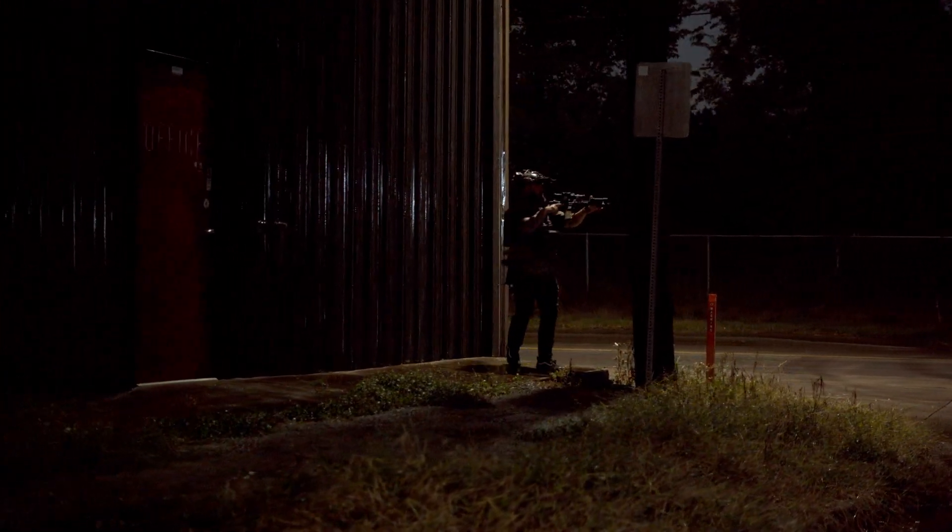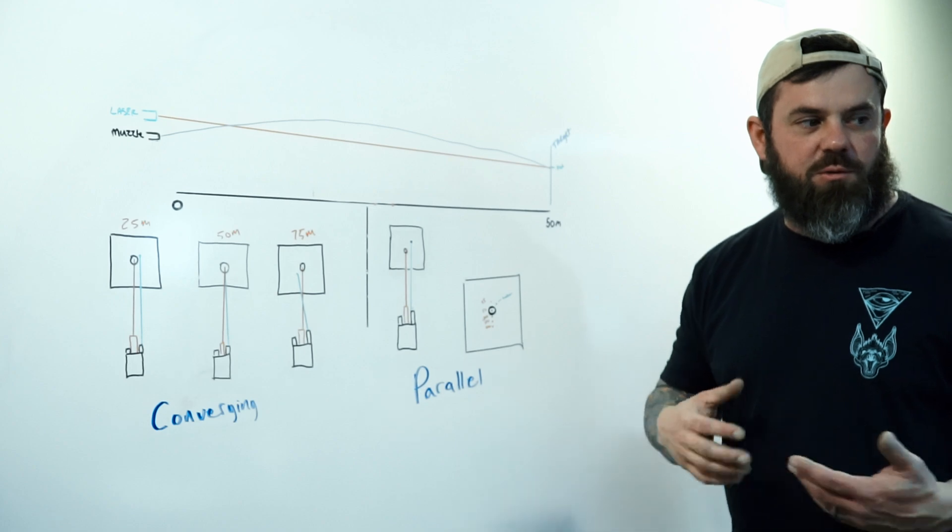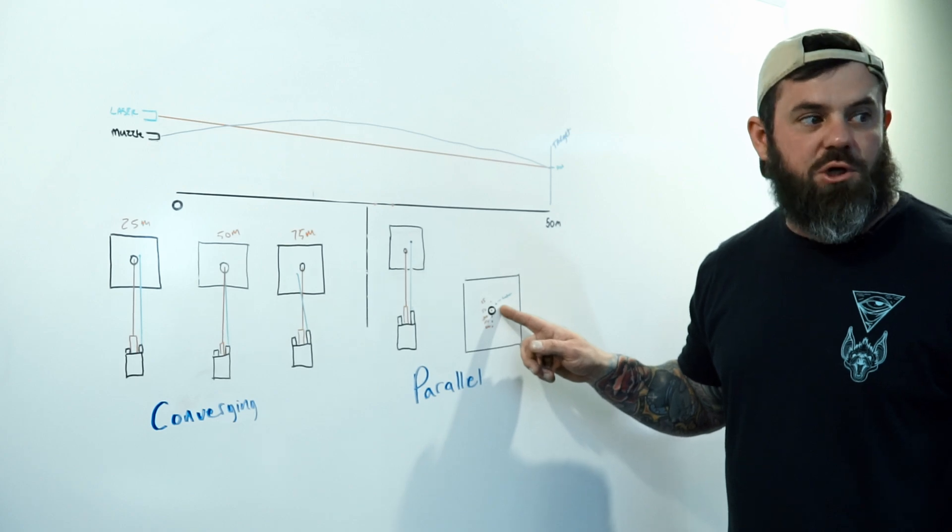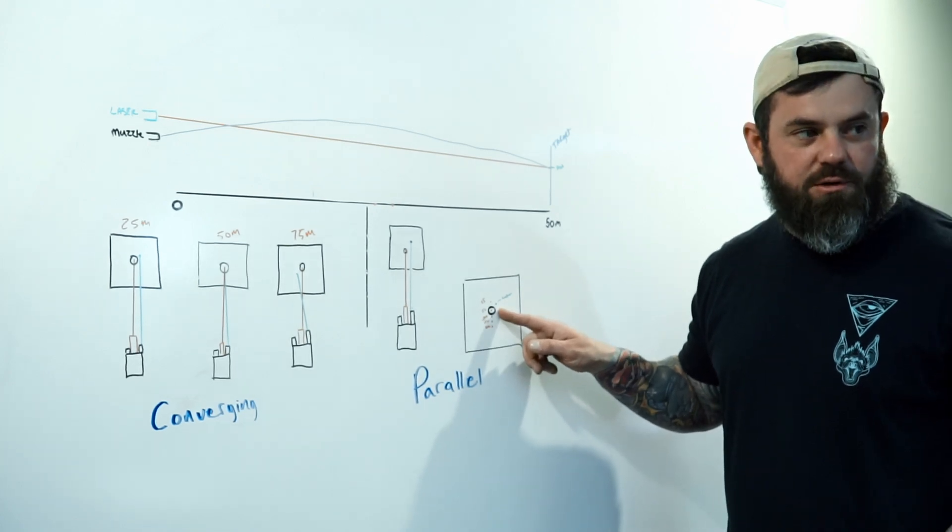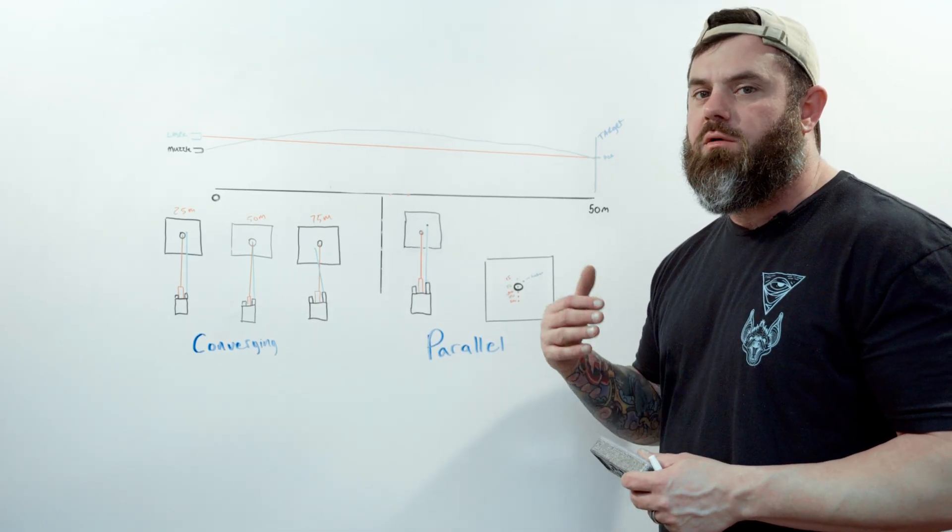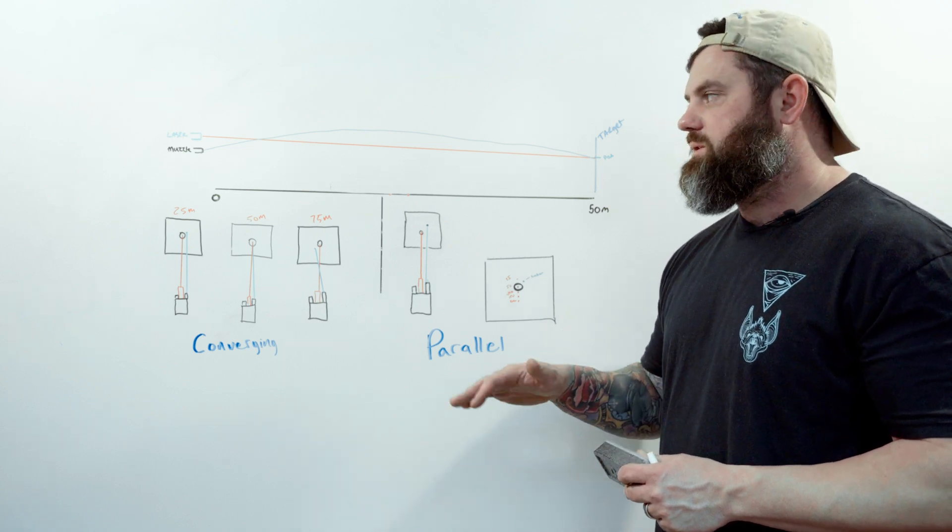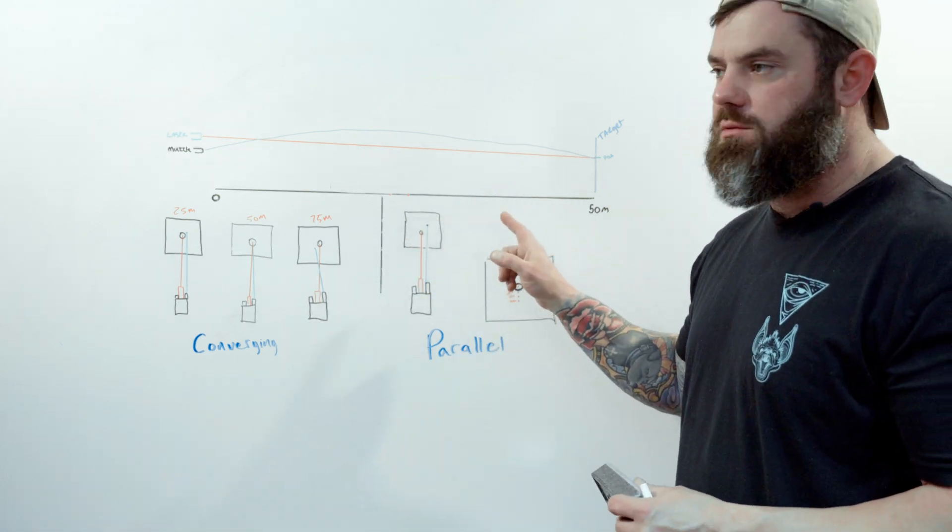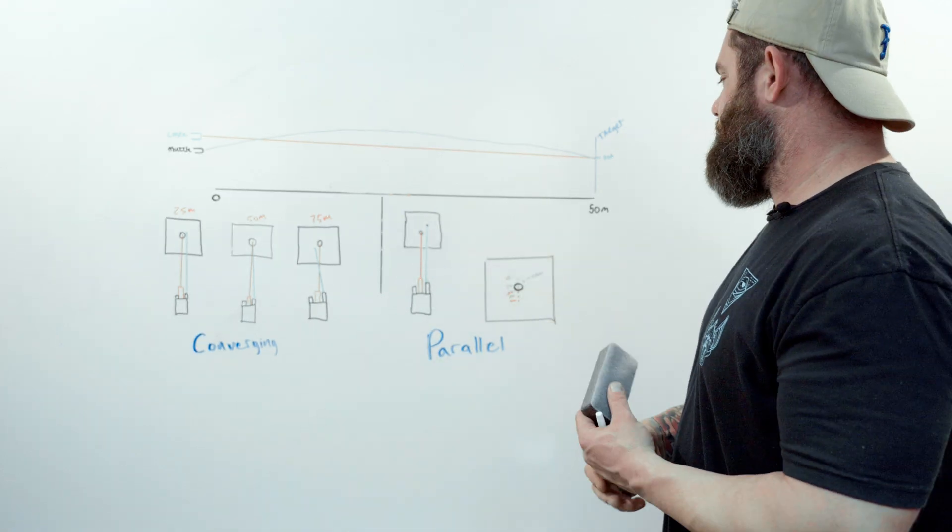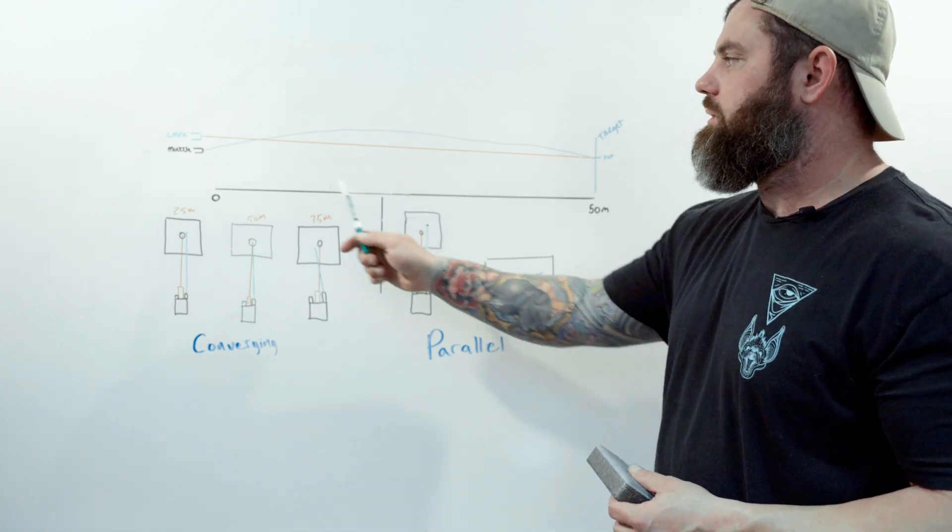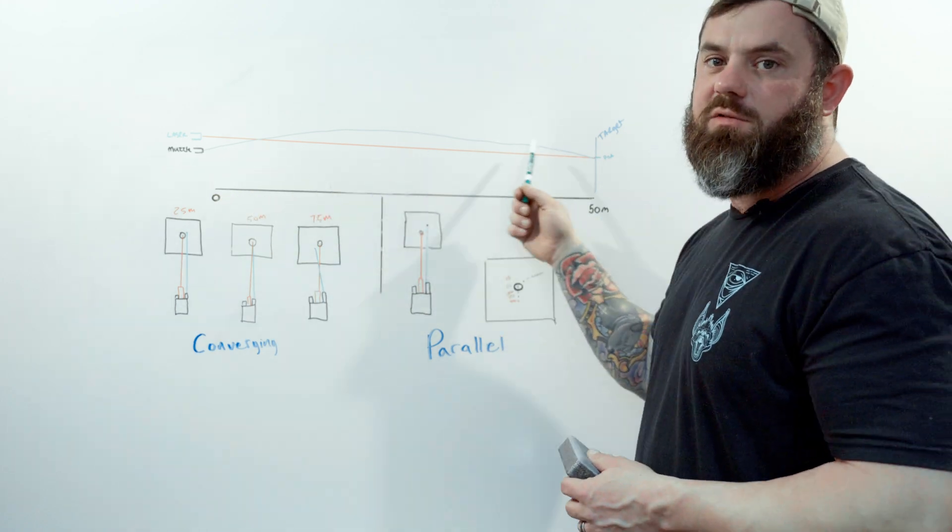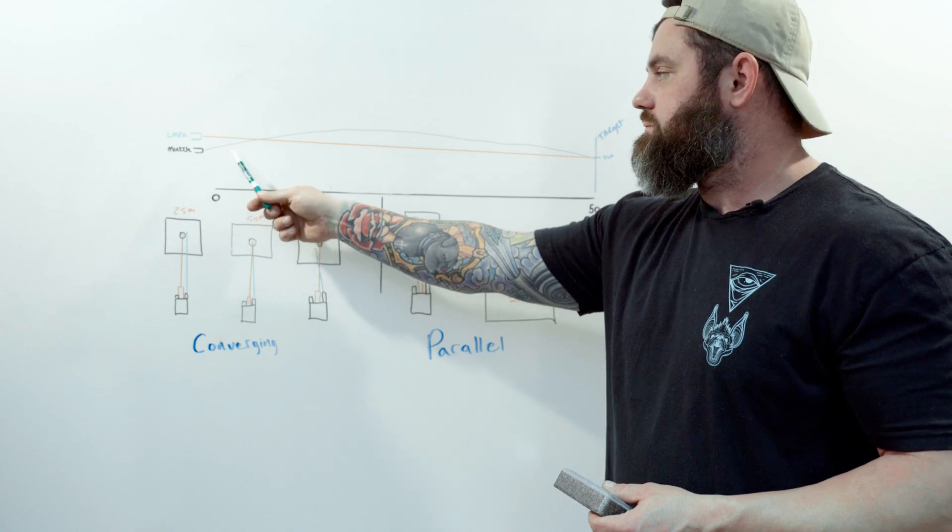It would be incumbent on you to determine the ballistic performance of your particular weapon system and come up with a mental dope chart, if you will, of where you need to hold your laser at different ranges. I'd like to give a more concise representation of what I'm trying to explain as it pertains to ballistic performance in relation to laser aiming solutions. This is not an accurate diagram by any means. I'm showing 50 meters to the target here. This is the muzzle, this is the laser. Lasers travel in straight lines to infinity. Bullets do not.